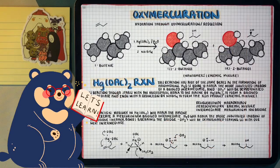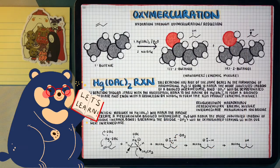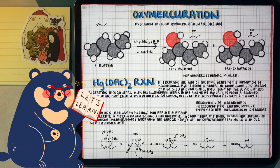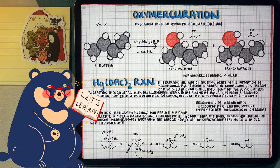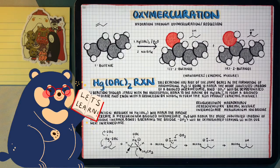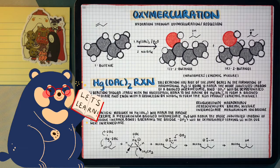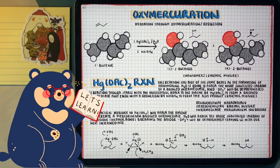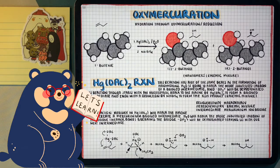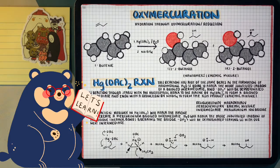Second example is going to be the oxidation of alkenes through oxymercuration. So this is using a mercury product to oxidize our alkene into Markovnikov alcohols. So the first part of this reaction is a lot like electrophilic addition, but the reaction ends with a necessary reduction step.